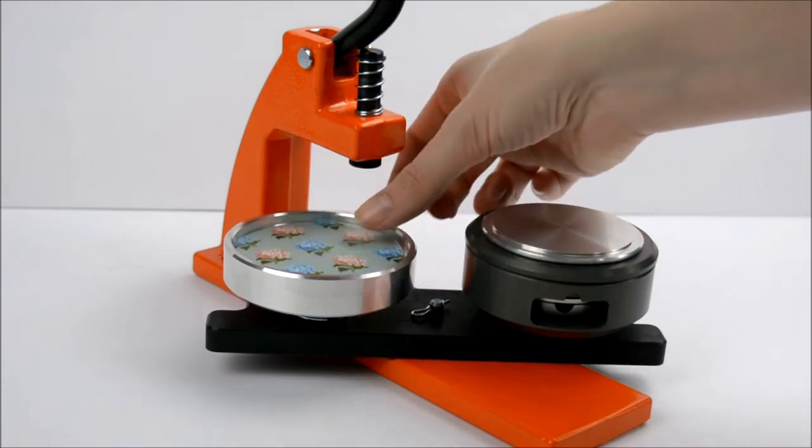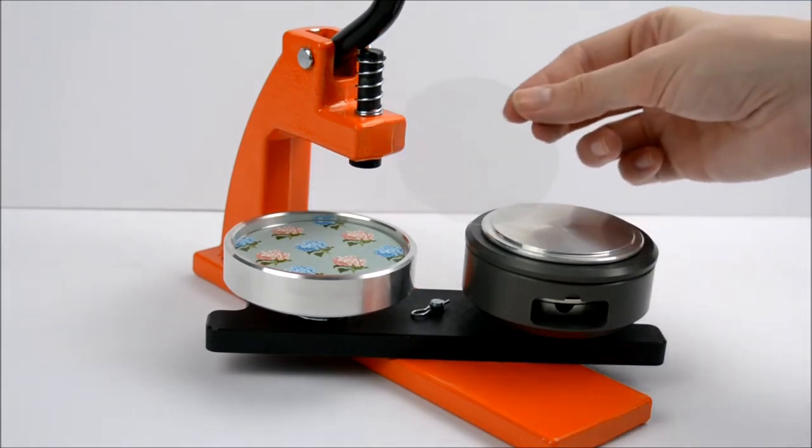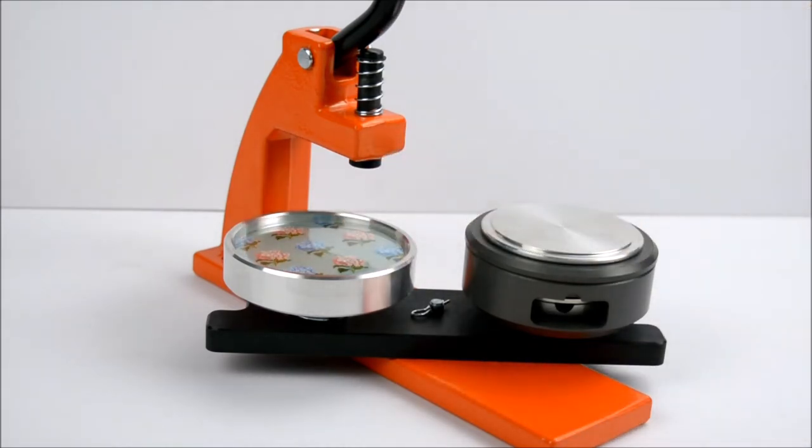Next place your artwork on top, face up. Then place one piece of plastic film on top of your artwork. It's important to only use one piece to prevent the machine from jamming.